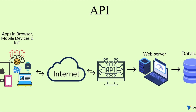Application Programming Interface (API): In SAP, an API is a set of rules and protocols for building and interacting with software applications. For instance, SAP provides APIs for connecting their S/4HANA system with other external systems.